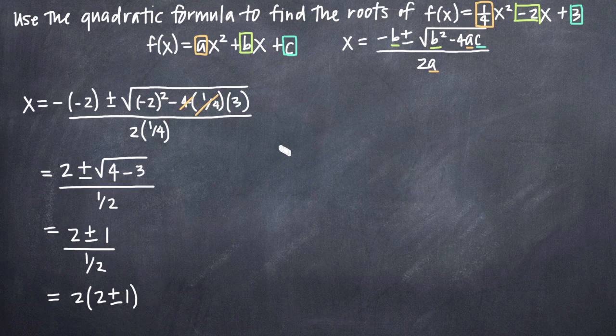So we'll get 2 roots here for x. We'll get x equals 2 times 2 plus 1. And we'll get x equals 2 times 2 minus 1. The first root will just give us 6. The second root will give us 2. And that's it. These are the roots of our function.